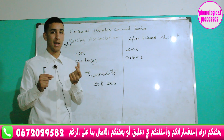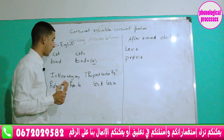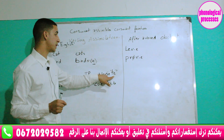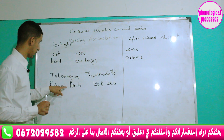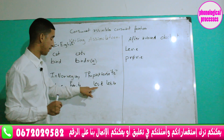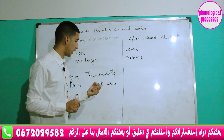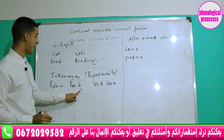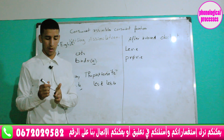We have another example in Norwegian, where the past tense suffix is marked as -T. For example, we have 'or' in the present and 'or-T' in the past, and 'less' in the present and 'less-T' in the past. So the past tense suffix is marked as -T.